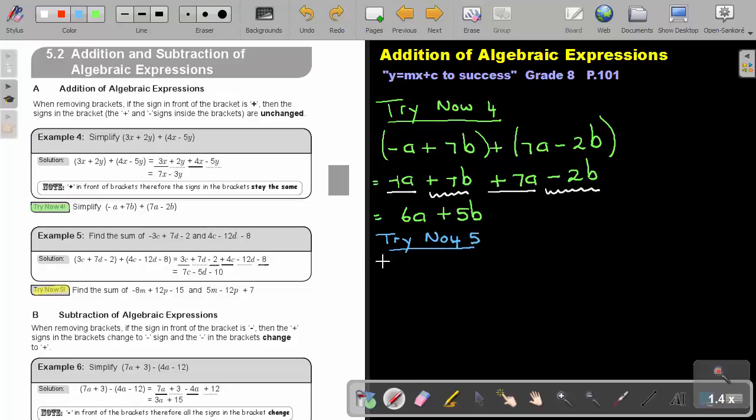Find the sum. So it's basically just saying negative 8M plus 12P minus 15. Sum means add. And it's 5M minus 12P plus 7. And I rewrite everything. And that will be, because it's addition, and there's just a 1. So it stays the same, everything.